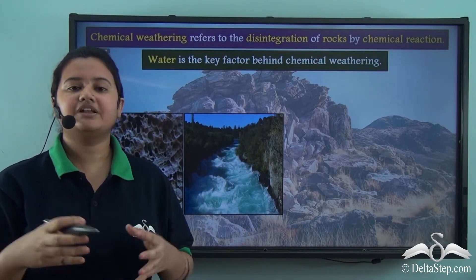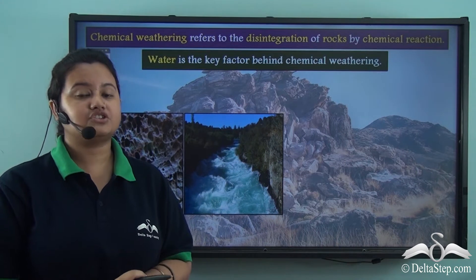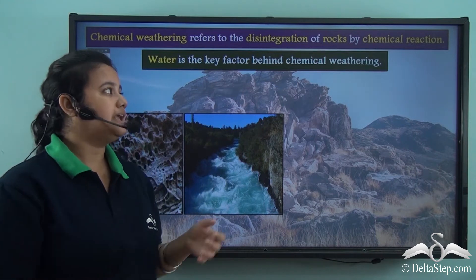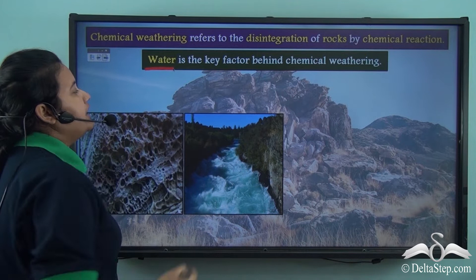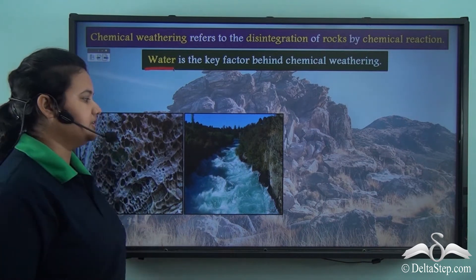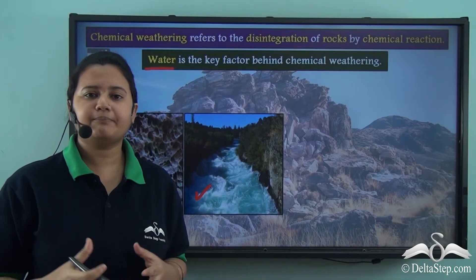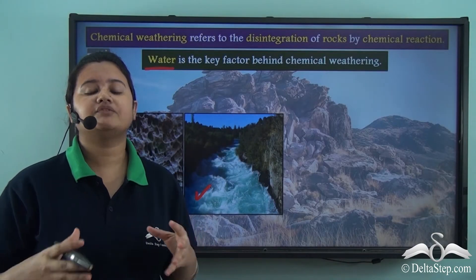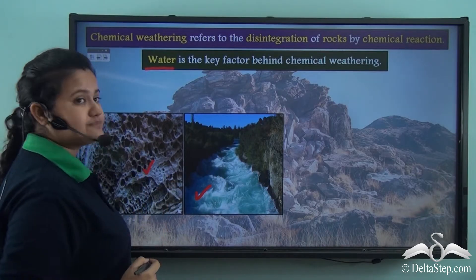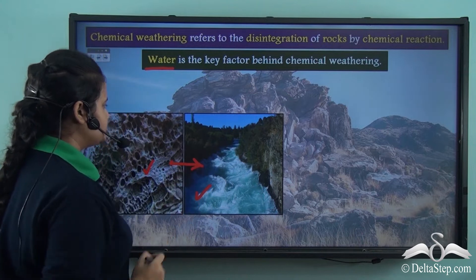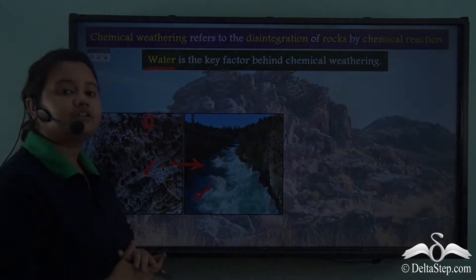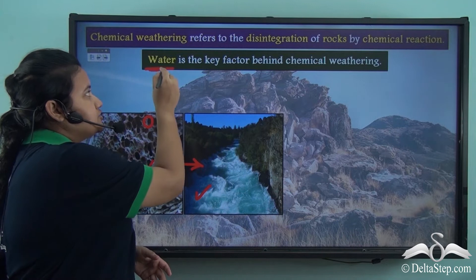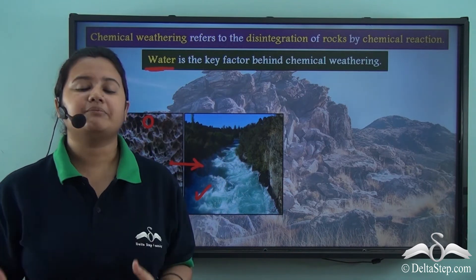In chemical weathering the chemical composition of rocks changes due to atmospheric conditions. The most important atmospheric condition that plays a vital role in chemical weathering is water, which may include rain water or surface water like rivers. Water is considered a universal solvent which dissolves most substances. Therefore most of the minerals present in the rocks get dissolved in water and leave holes in the rocks, or the chemical composition of the rocks changes when they react with water. So water is a key factor behind chemical weathering.